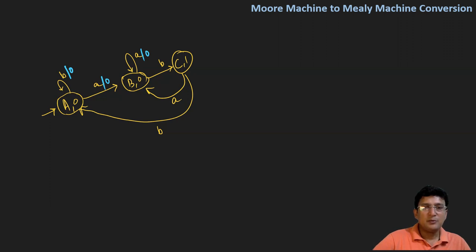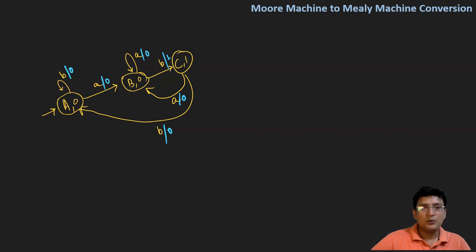On small b, I move to C, so the output associated will be the output associated with state C. On state C, by taking symbol a, I move to state B, so the output associated with this transition will be the output associated with state B. On B, I move to state A, hence the output associated with state A would be zero. Since I have associated the outputs with the transitions, I will remove the outputs associated with the states, and this becomes the Mealy machine.